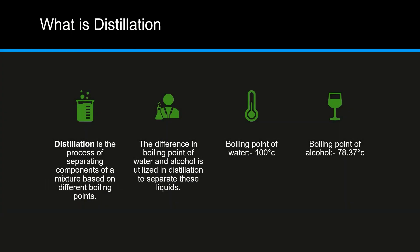So what is distillation? It is the process of separating components of a mixture based on different boiling points. For alcohol, the boiling point is 78.37 degrees Celsius, and for water it is 100 degrees Celsius. So you can understand that alcohol will vaporize faster than water, and so the liquid will separate.